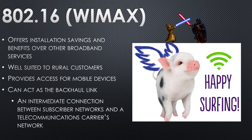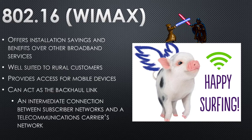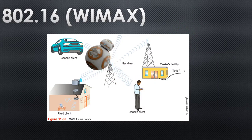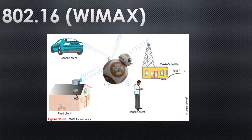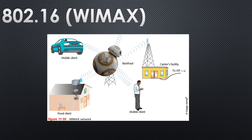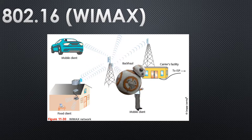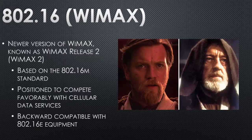WiMAX is good for rural customers who can't get other options — you take what you can get when you live way out of town. There's a carrier facility that transmits to an antenna, which acts sort of like a repeater and transmits out to the client. The newer version, WiMAX 2, is based on a Wi-Fi-related standard and competes with cellular. It's backwards compatible.